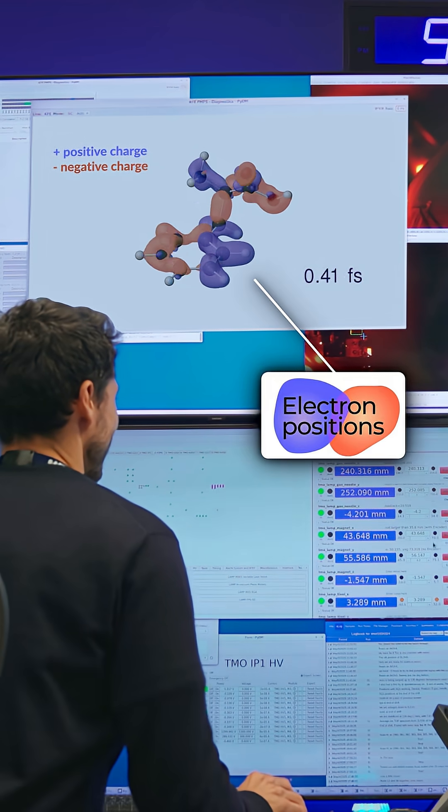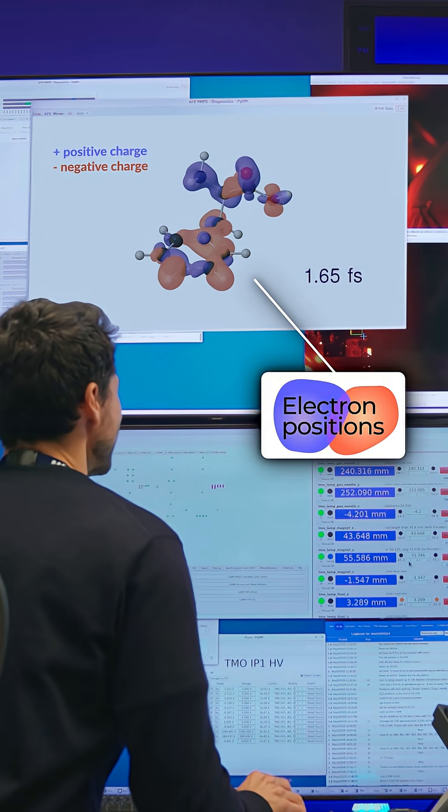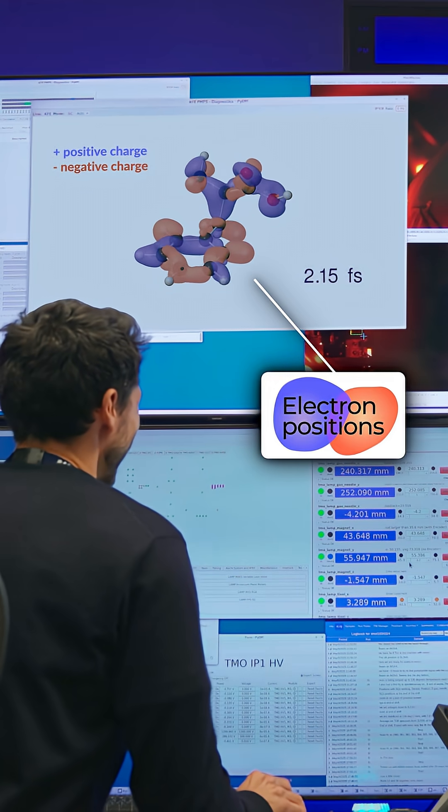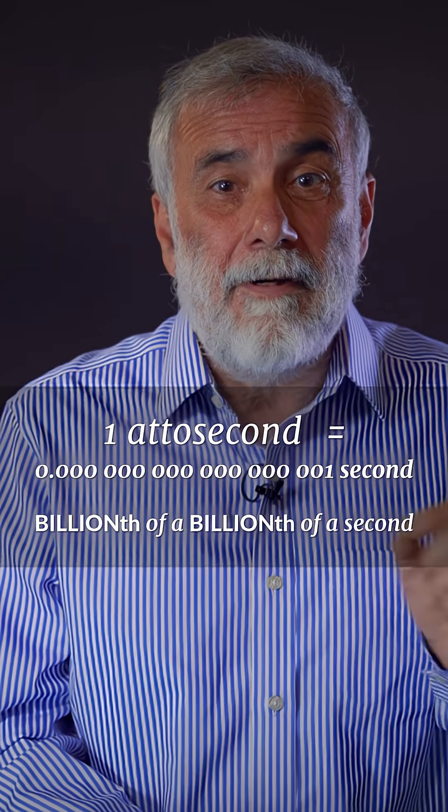Electrons travel at speeds much faster than bee wings. In fact, an electron can travel from one side of a molecule to the other in a matter of attoseconds. Now an attosecond is an incredibly short unit of time - it's a billionth of a billionth of a second.